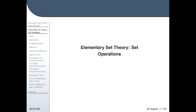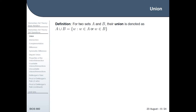Now we're going to discuss some of the elementary operations of set theory. The union of two sets, denoted A union B or 'A or B', is the set of elements that are either in A or in B. Similarly, the intersection, A intersect B or 'A cap B', requires that you be in both A and B. If you're only in one or the other, you don't make it — you have to be in both.